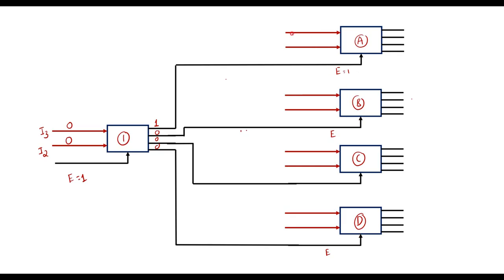Decoder A also has 2 inputs: I1 and I0. If I1 and I0 are 0,0 then line Y0 will be high, rest all will be 0. If I1=0 and I0=1, then Y1 will be high. If I1=1 and I0=0, then Y2 will be high. If I1=1 and I0=1, then Y3 will be high.